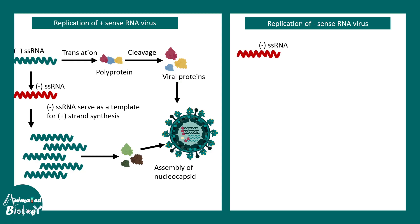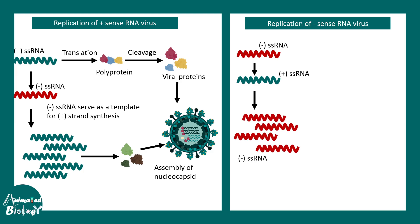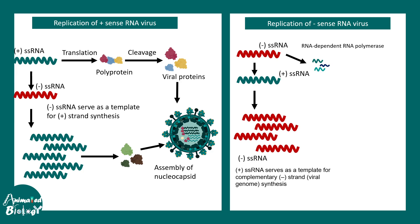Things are more complicated with negative sense RNA virus because negative sense RNA cannot be recognized by the ribosome, so it cannot be directly translated — in this orientation it is literally useless. It has to be converted into an intermediate which is positive stranded RNA. The negative sense RNA can be transcribed with the help of RNA-dependent RNA polymerase (RDRP), which is carried by the virus itself, and it performs transcription while also making the positive sense RNA template.